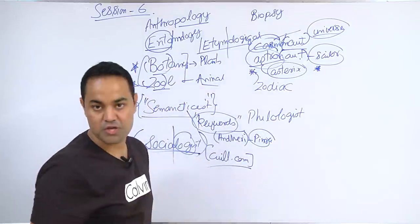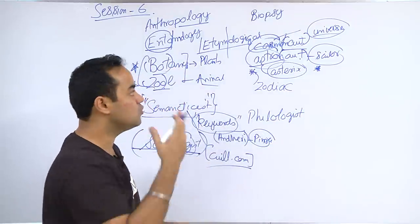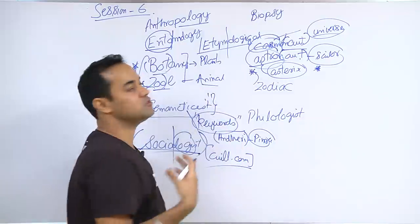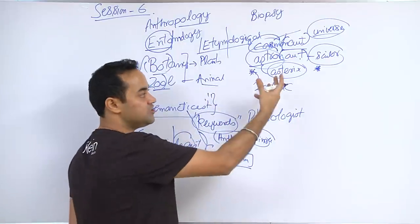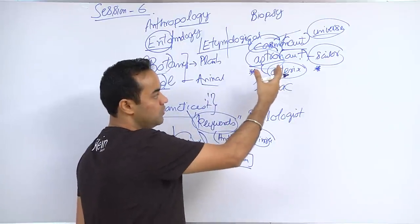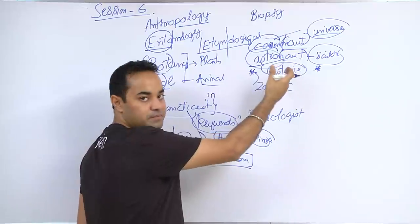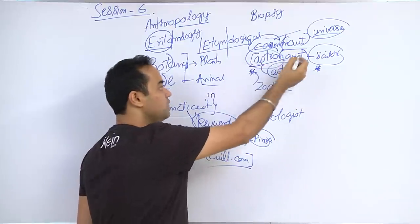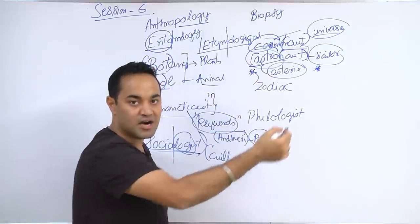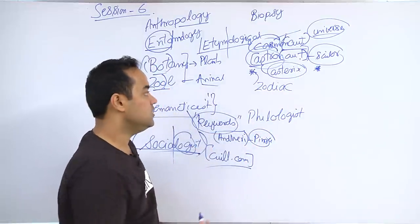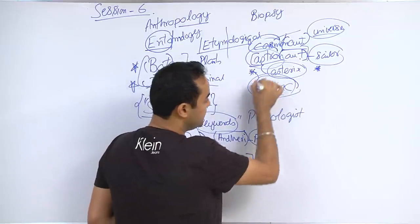A sailor of the star is called astronaut. A universe sailor is called a cosmonaut. So the guy who plays around with the universe, who repairs spaceships, he comes in the cosmonaut category. The guy like Rakesh Sharma of India who went to the moon - people who go to different planets and stars are called astronauts.